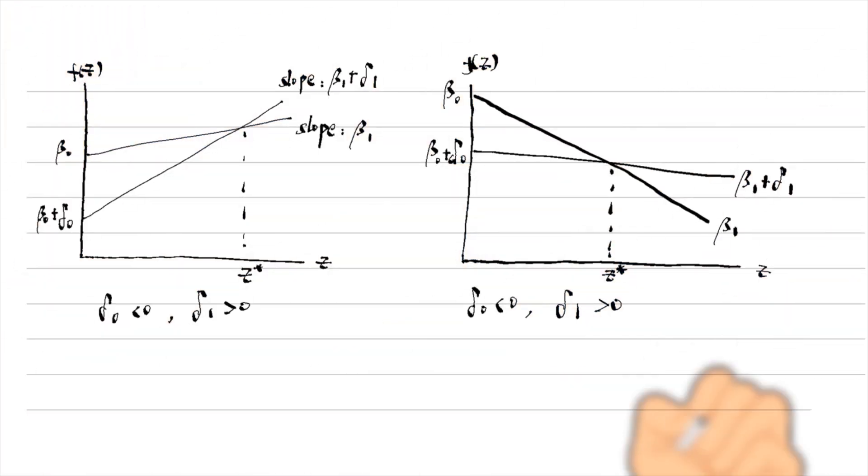As shown in the left graph, if a line starts lower than the other line, it has to be steeper than the other to intersect it. Delta 0 and delta 1 have opposite signs. It is true in the right graph too.